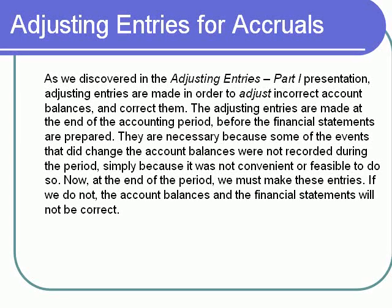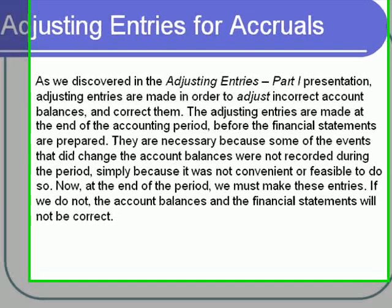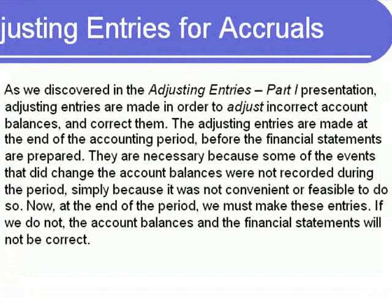As we discovered in the previous presentation concerning adjusting entries for deferred revenue and expense items, adjusting entries are made in order to adjust the account balances at the end of the period and correct them. The adjusting entries are made at the end of the accounting period before the financial statements are prepared, and they are necessary because some of the events that did change the accounts were not recorded during the period. This happened simply because it wasn't convenient or feasible to do so, and now, at the end of the period, we must make these entries.